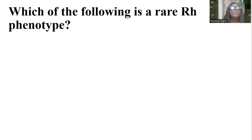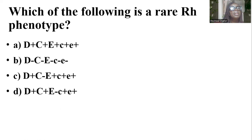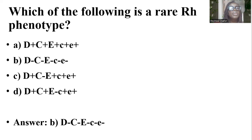Which of the following is the rare RH phenotype? And the answer is B — a situation where all the common RH antigens are absent in an individual is a rare RH phenotype.